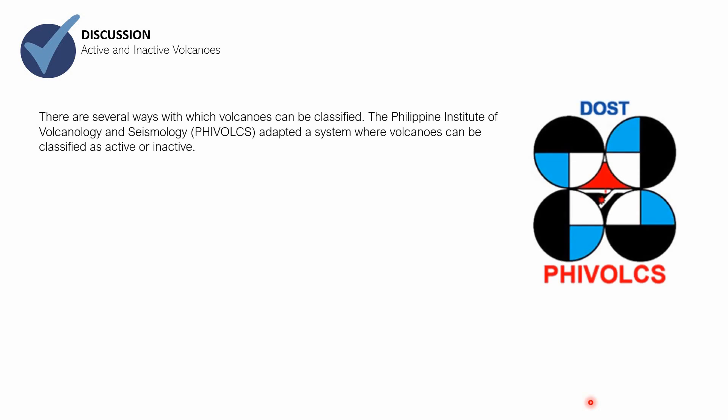Active and inactive volcanoes — there are several ways with which volcanoes can be classified. The Philippine Institute of Volcanology and Seismology, or PHIVOLCS, is the one in charge of classifying and monitoring them. PHIVOLCS is an institution under the Department of Science and Technology in the Philippines. They are in charge of classifying volcanoes, and one way they can be classified is whether they are active or inactive.